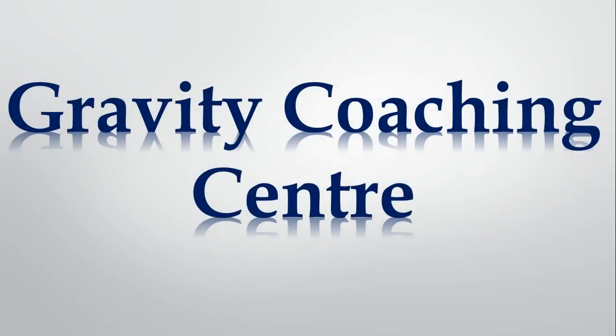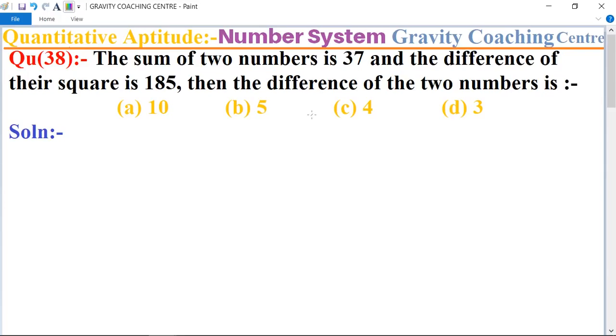Welcome to our channel, Gravity Coaching Center. Quantitative Aptitude, Chapter Number System, Question 38: The sum of two numbers is 37 and the difference of their square is 185. Then the difference of the two numbers is?